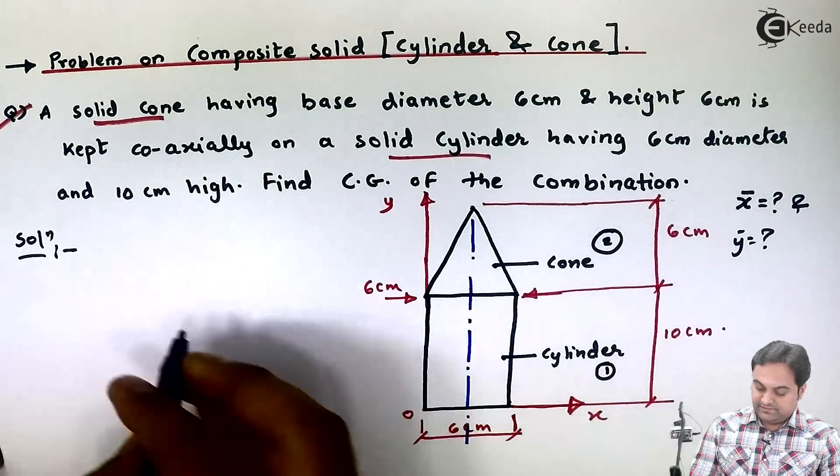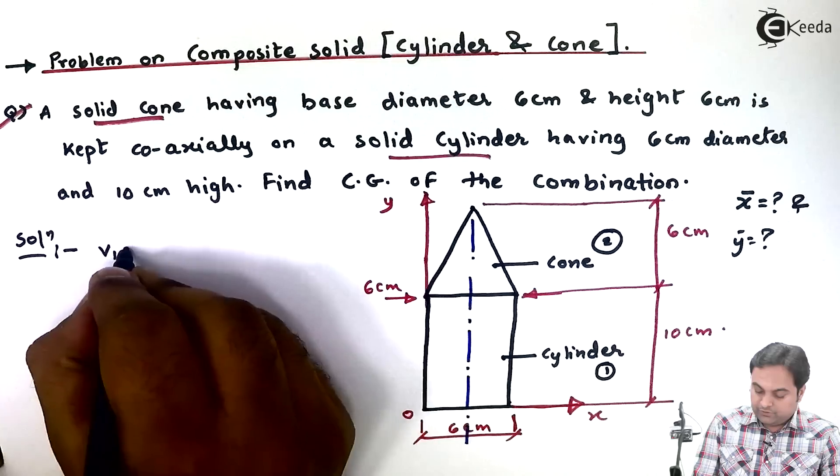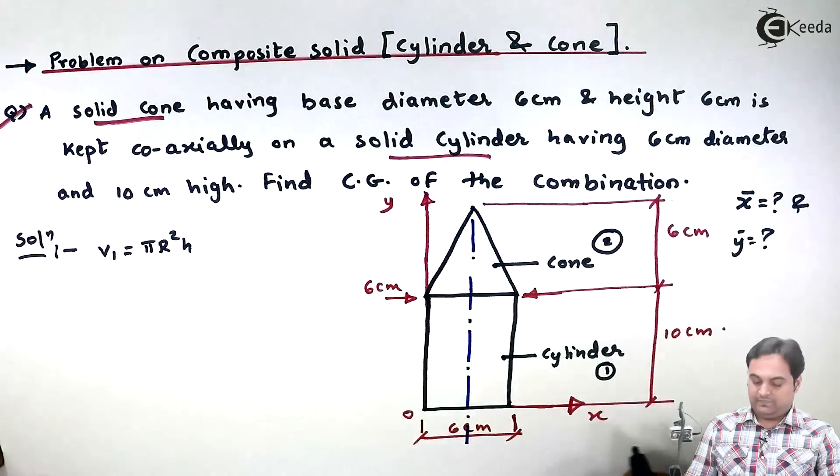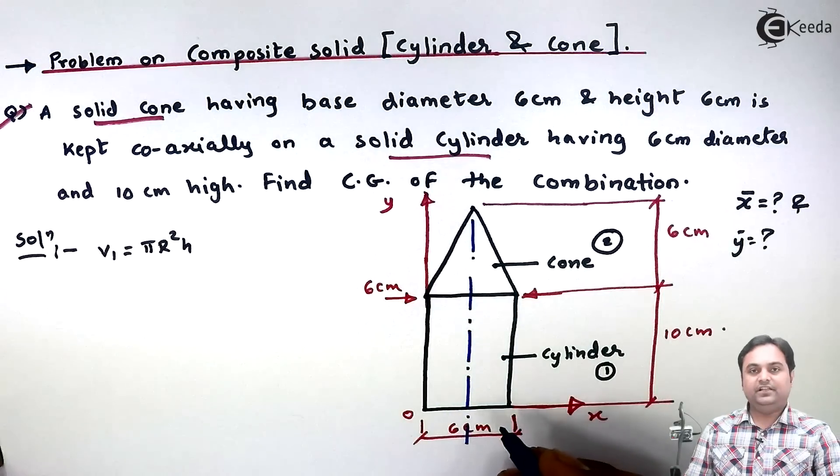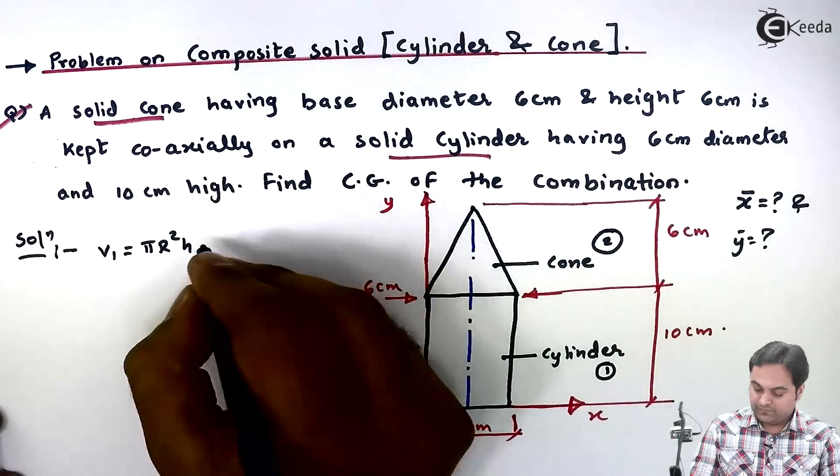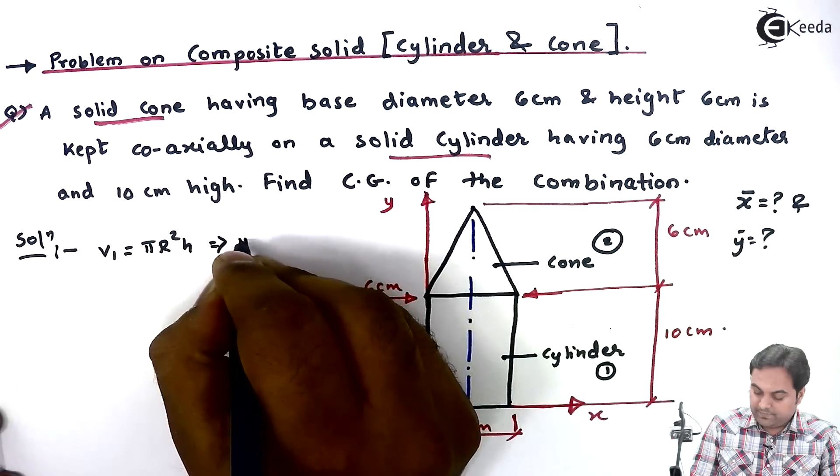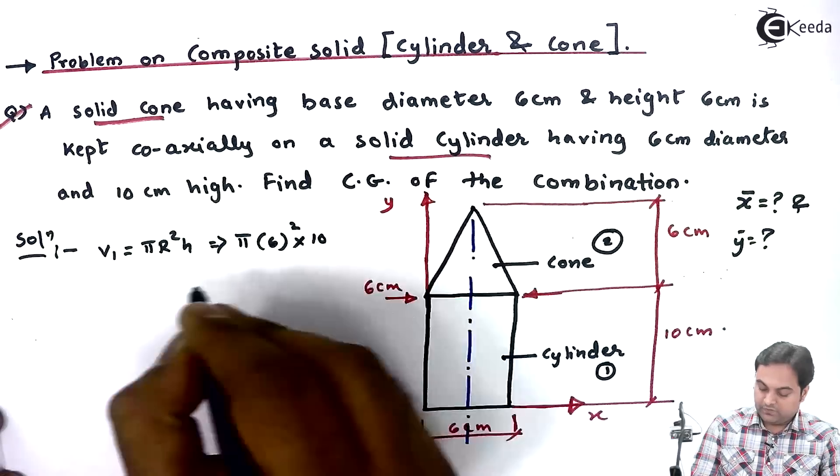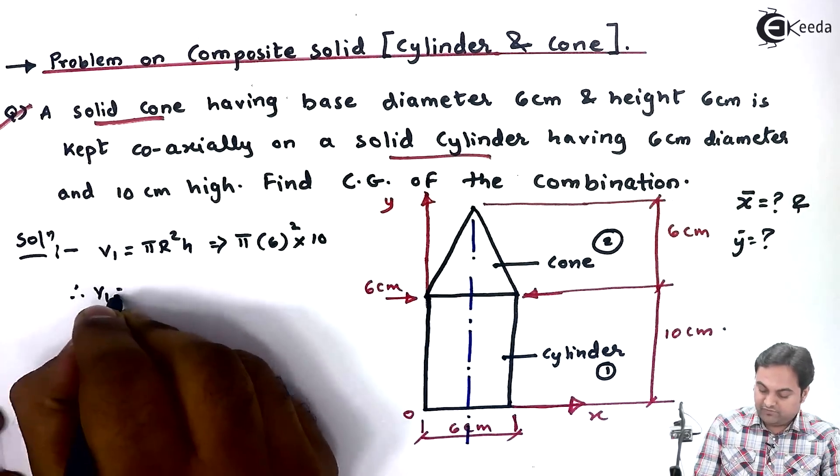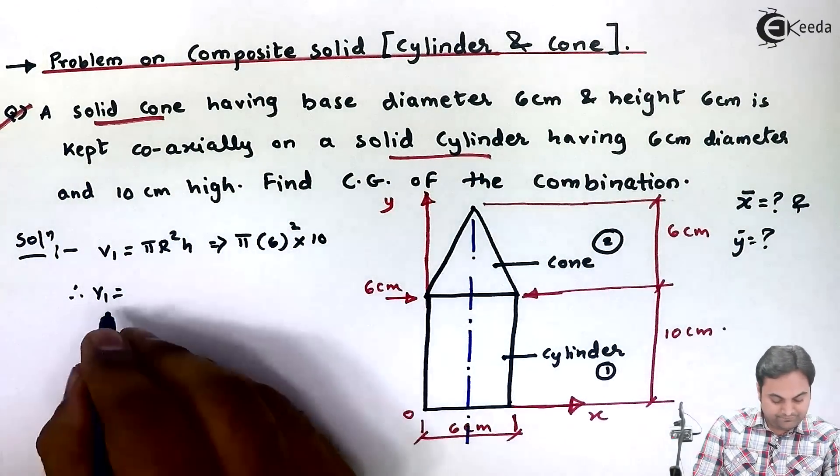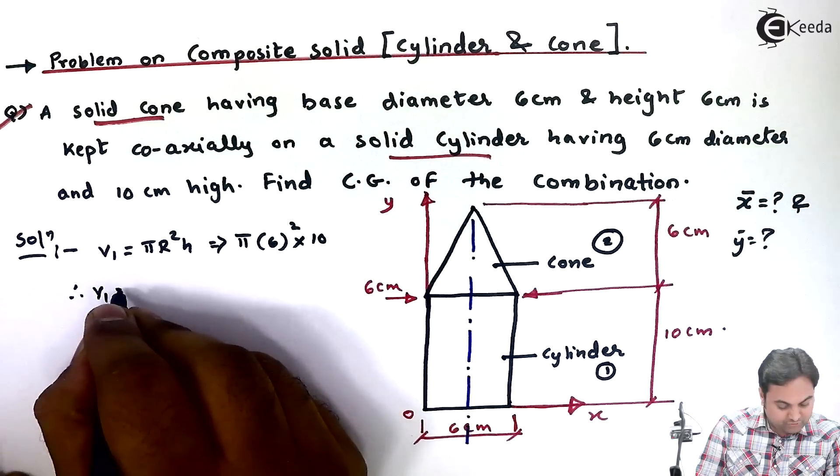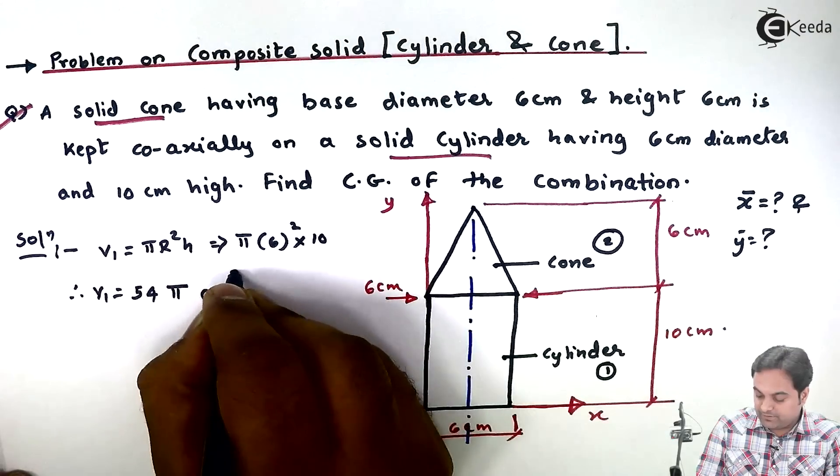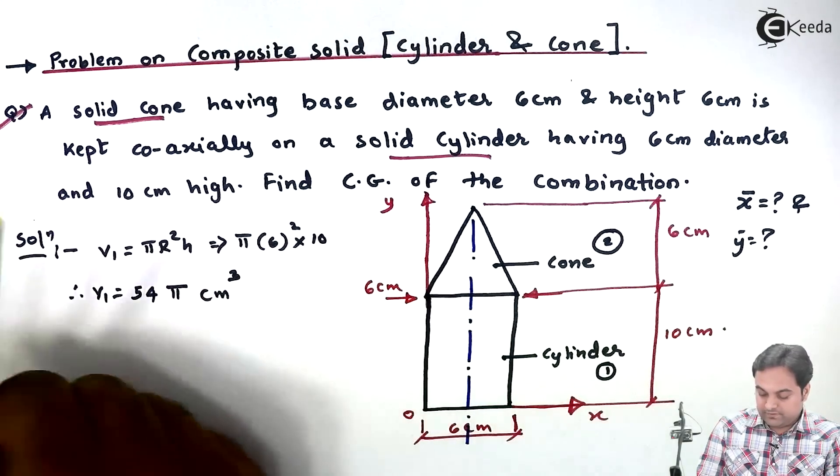Now I'll take the cylinder and find its volume. V1 is equal to pi R square H. Since we are dealing with center of gravity we need to calculate the volume. So here this will be pi into radius is 6, height of the cylinder is 10. So I'll keep V1 in the form of pi. That answer is 54 pi cm raised to the power 3. This is V1.